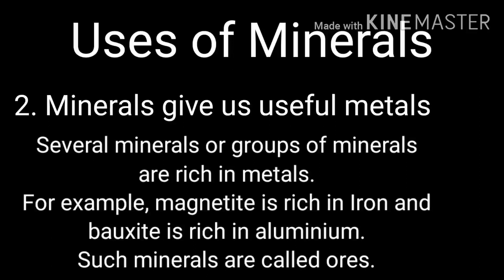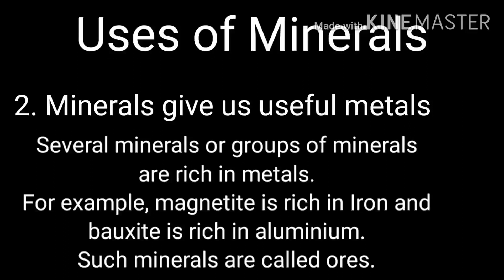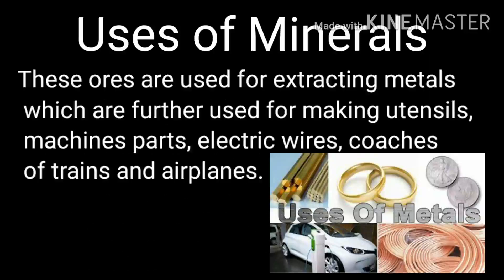Minerals give us useful metals. Several minerals or groups of minerals are rich in metals. For example, magnetite is rich in iron and bauxite is rich in aluminum. Such minerals are called ores. Ores are metallic minerals. These ores are used for extracting metals, which are further used for making utensils, machine parts, electric wires, and coaches of trains and airplanes.